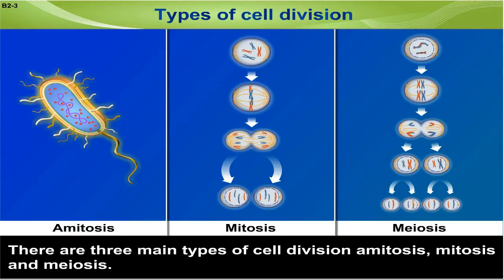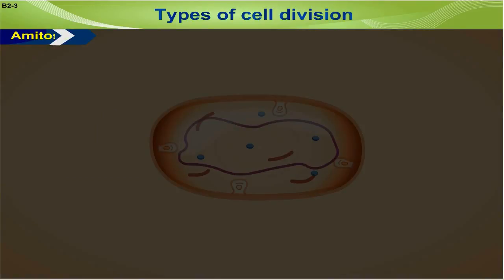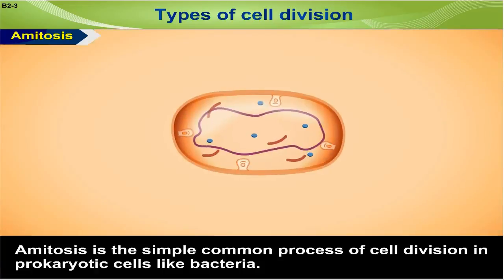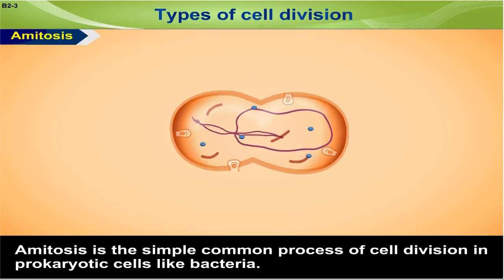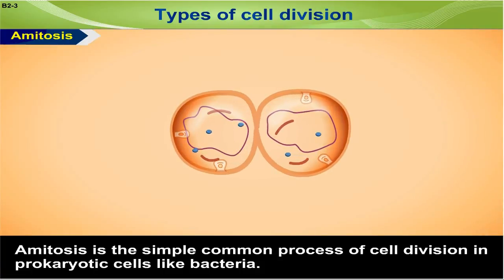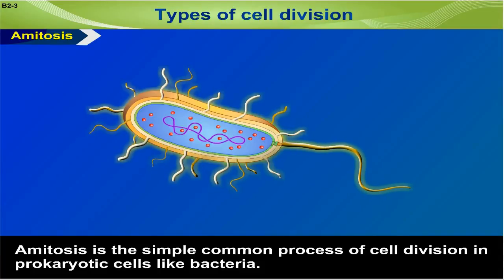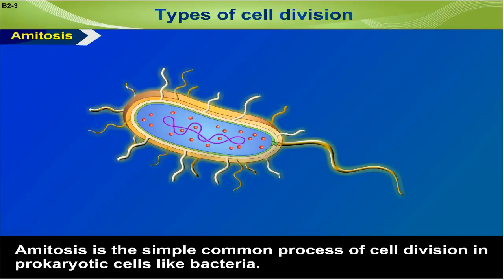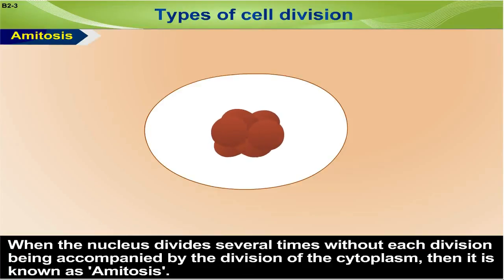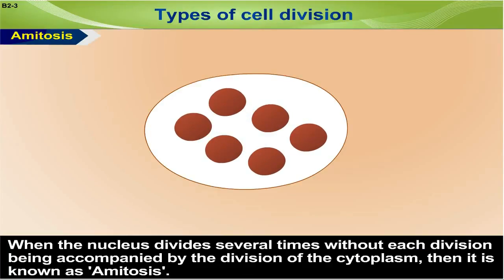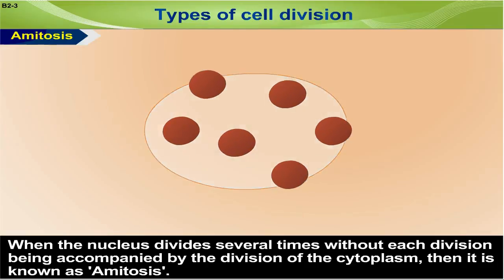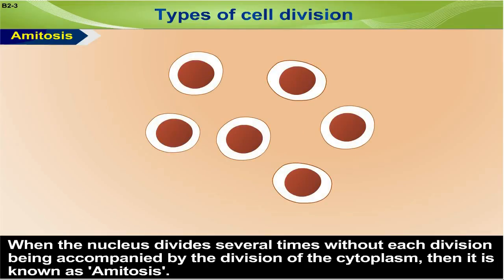Amitosis is the simple common process of cell division in prokaryotic cells like bacteria. When the nucleus divides several times without each division being accompanied by the division of the cytoplasm, then it is known as amitosis.